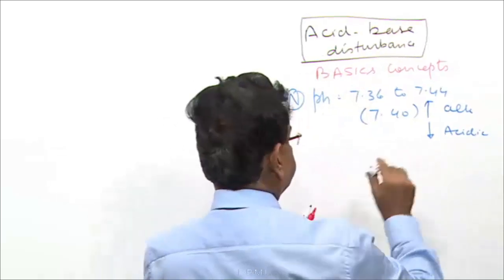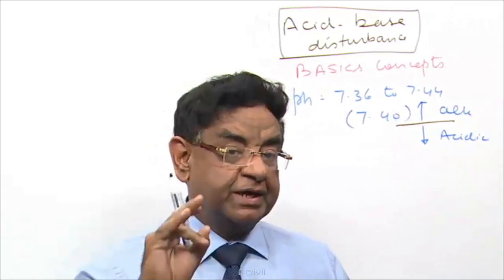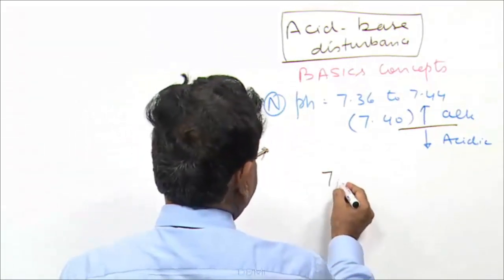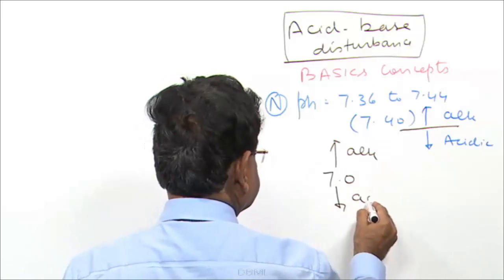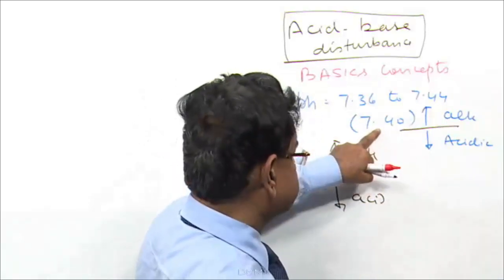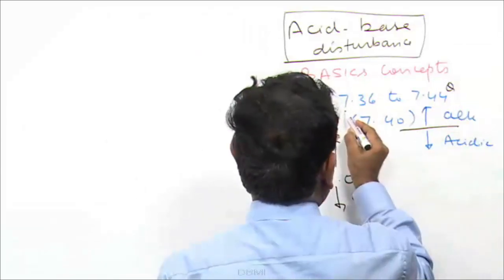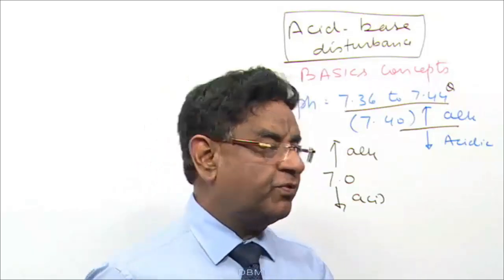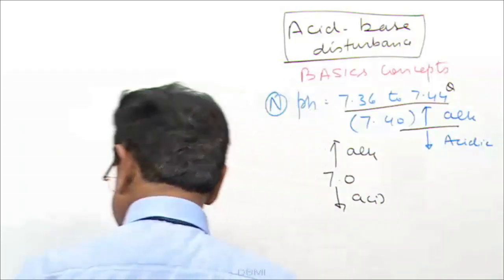Because we have taken 7.40 as the normal pH. Here I would like to clarify one point. Remember, in our school days when we read physics and chemistry, we were taught that 7 is the normal pH, anything above 7 is alkali, and anything below 7 is acid. But in medical sciences, the normal pH is 7.40, average 7.36 to 7.44. Anything above 7.40 will be alkali and anything below 7.40 will be acidic. This basic concept you have to be very clear about.